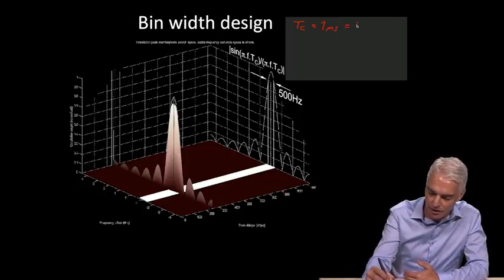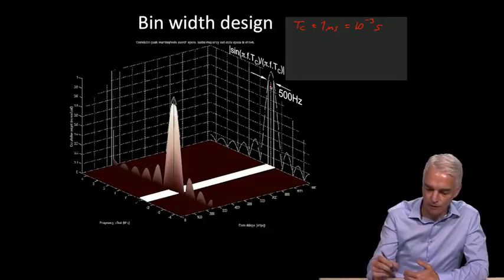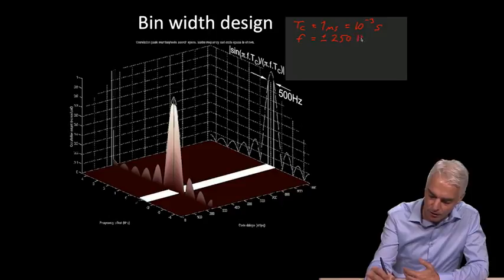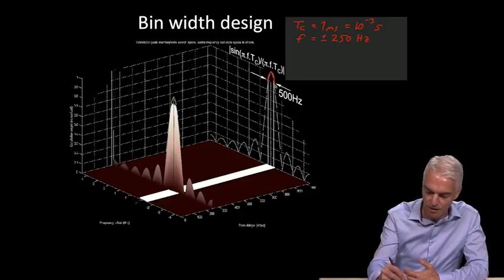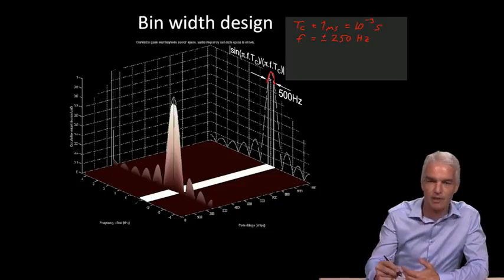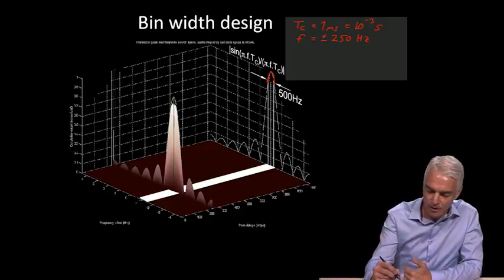Let's write it in seconds, so it's 10 to the minus 3 seconds. We've decided to look at a frequency bin of 500 hertz total width, so f is equal to plus or minus 250 hertz. That's how much the frequency error goes one way or the other way from the peak.